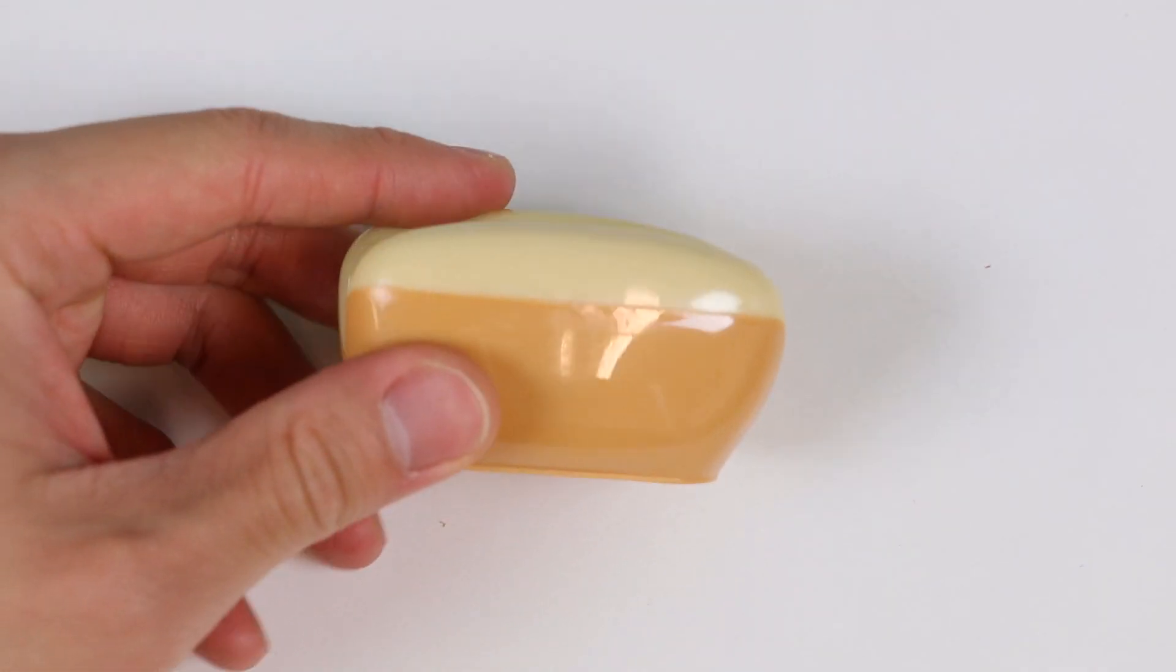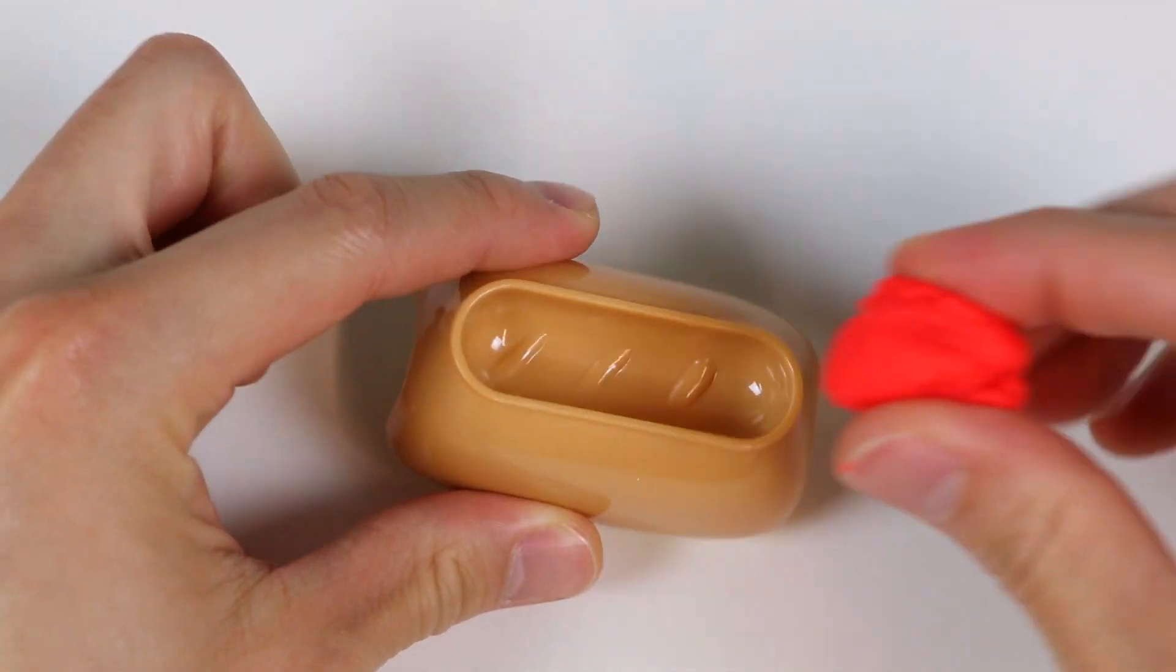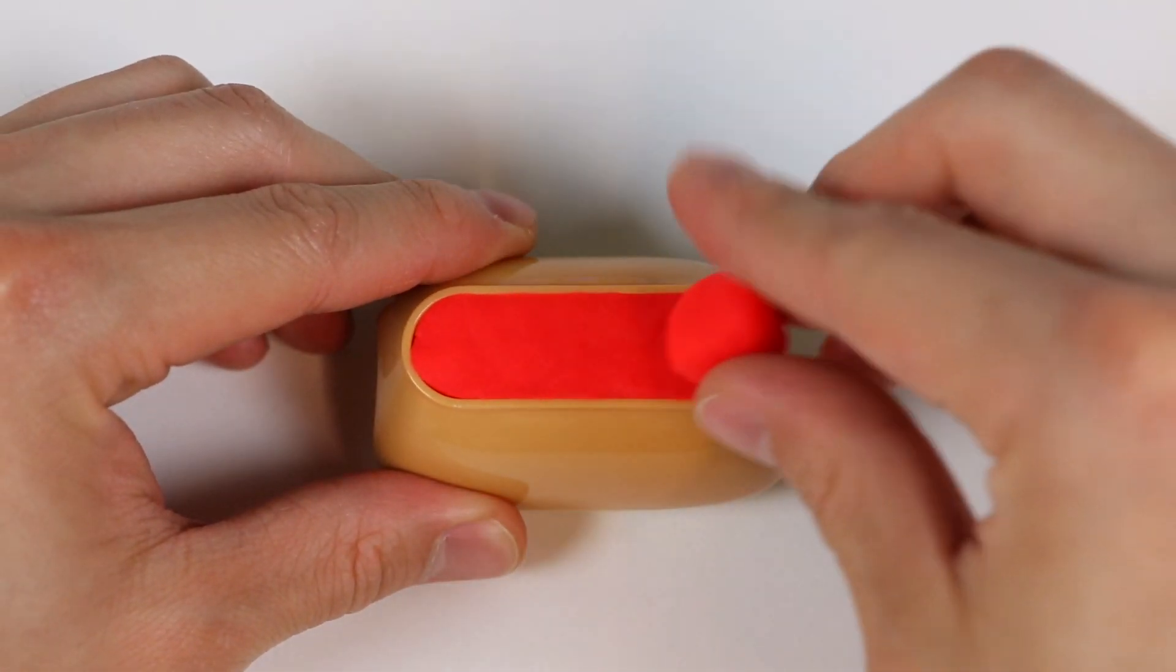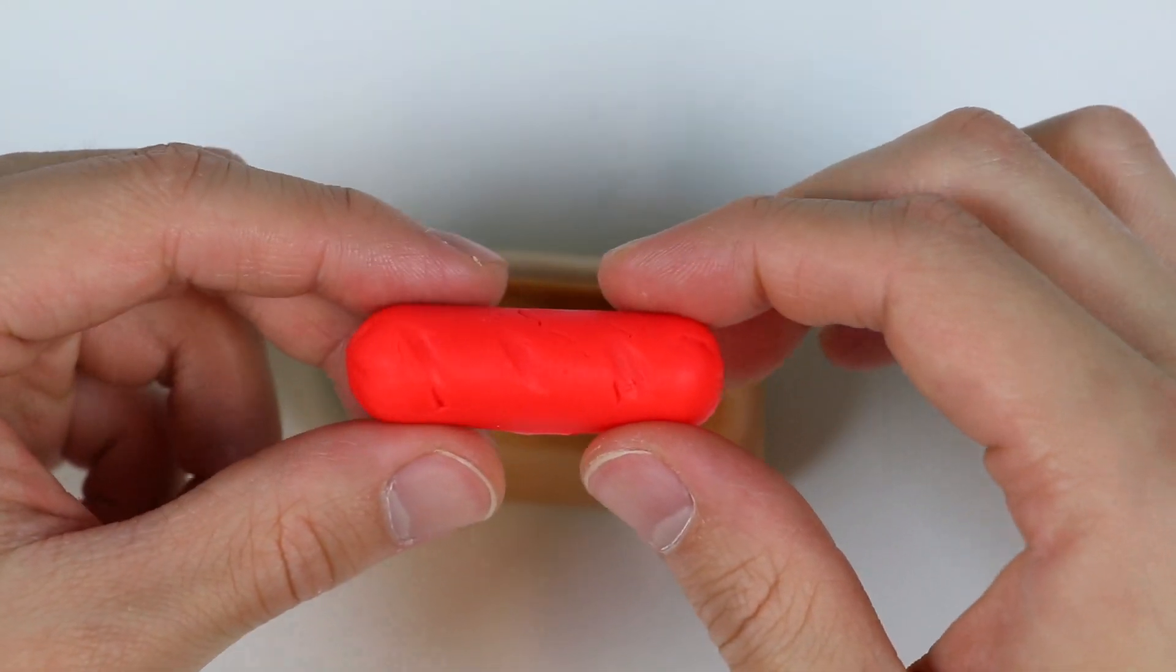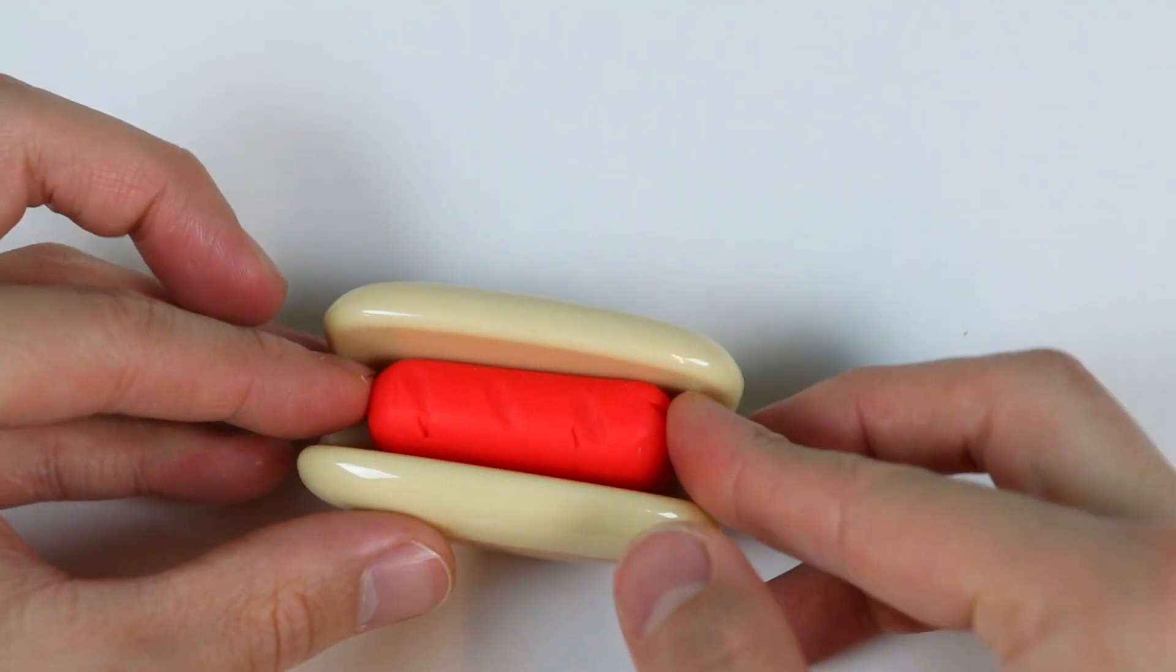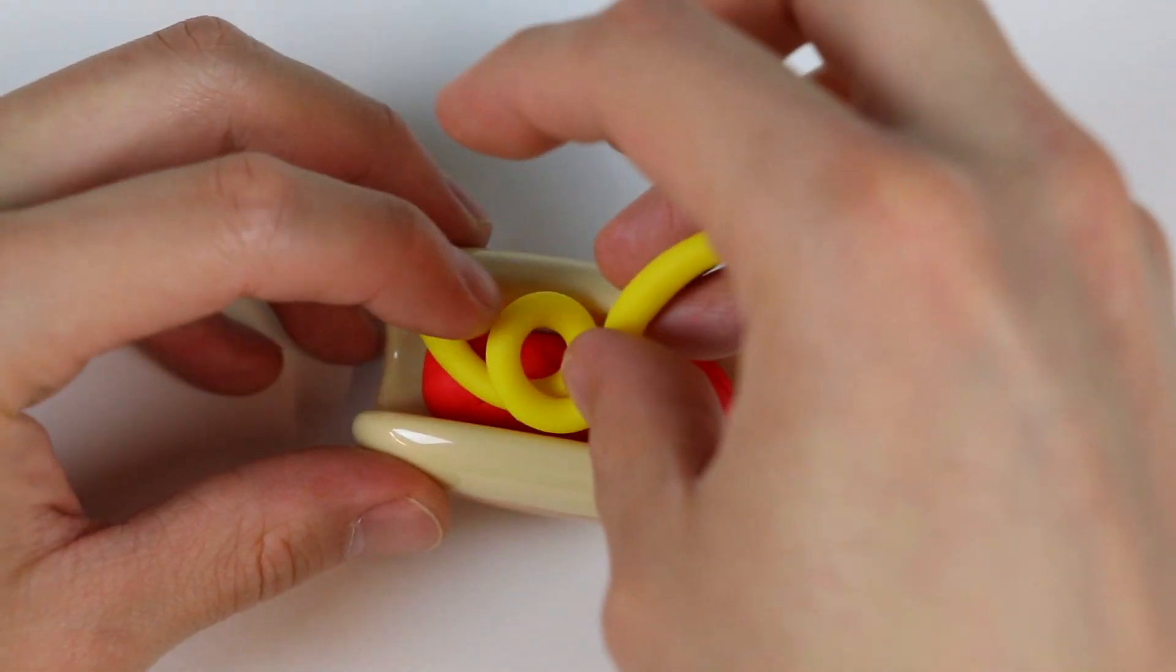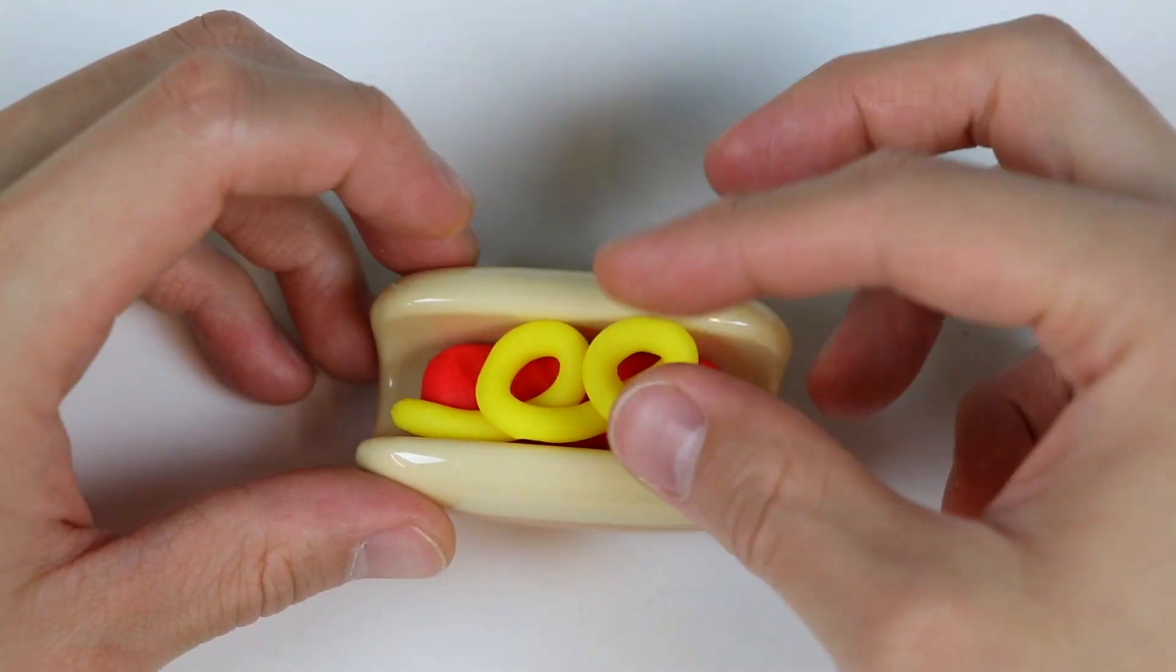Let's make another lunch item. Hot dogs! Here's the bun, and if you look at the bottom, we can make the sausage. Use red play-doh. Nice! Let's put our cooked sausage in the bun. But we're not finished yet. This hot dog could use a little bit of mustard.